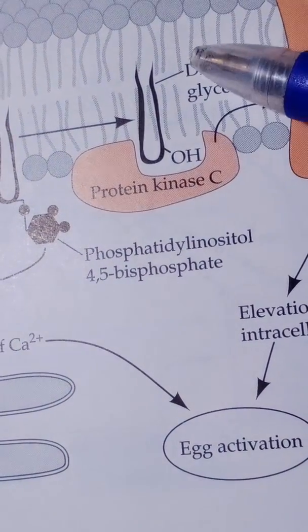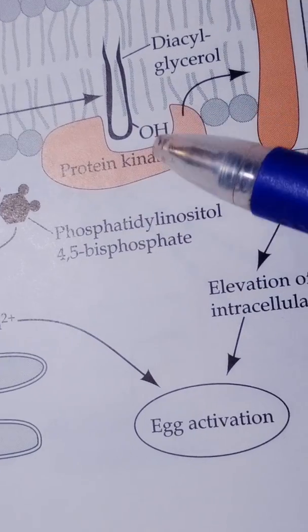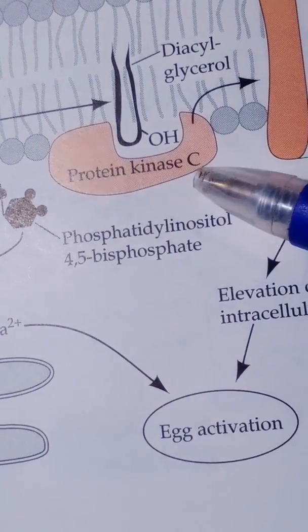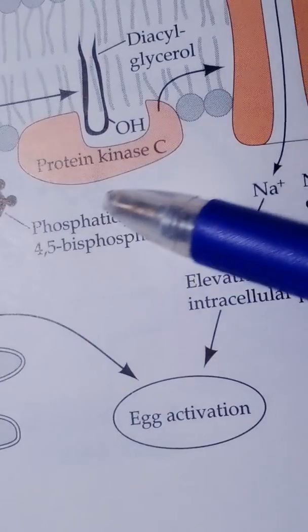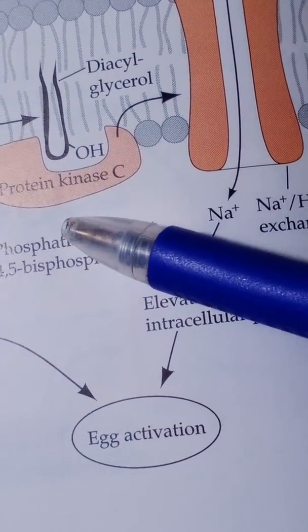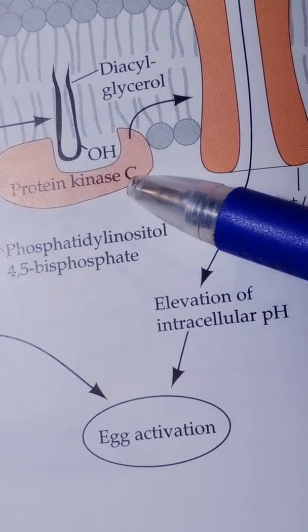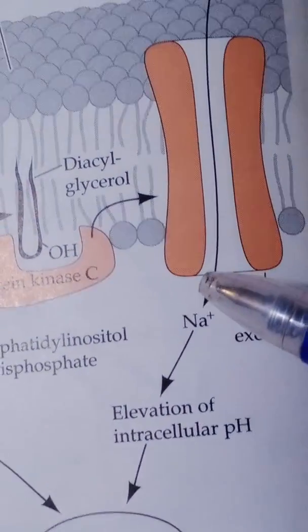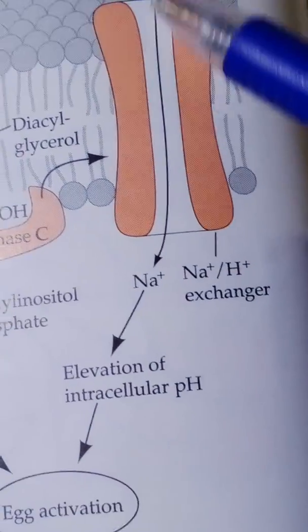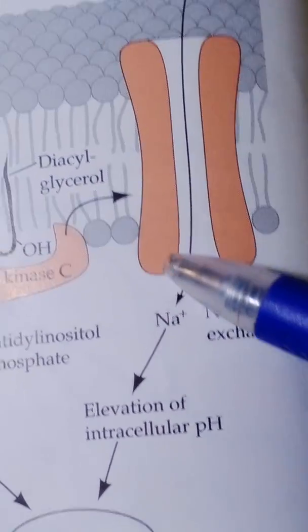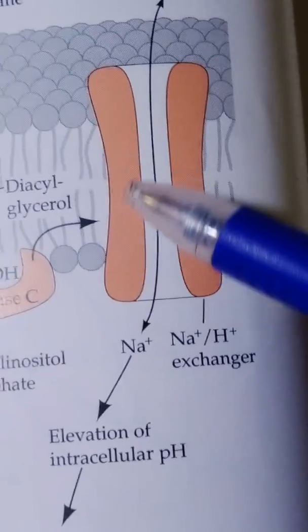And diacylglycerol production causes protein kinase C activation. And protein kinase C is an enzyme which opens the sodium hydrogen exchange gates.